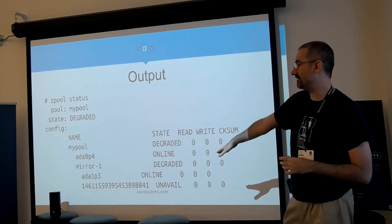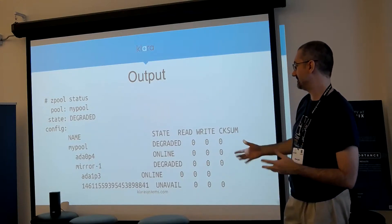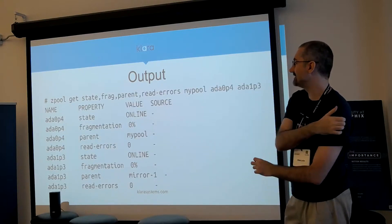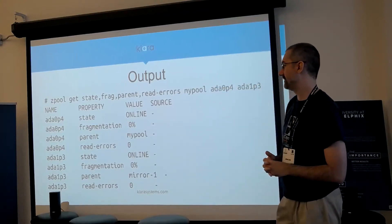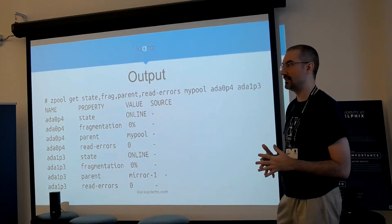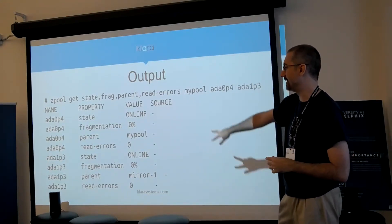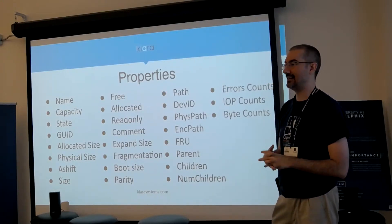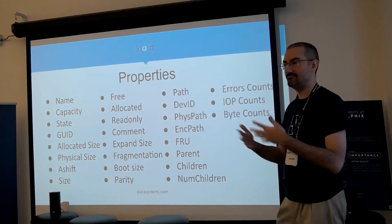In this example pool I have a device that's missing, but you can still read the ZAP because it's metadata stored in multiple copies. I have a strange pool with a single device and then a mirror where half the mirror is missing. You can say zpool get state, fragmentation, parent, and read-error-count for two disks in the pool, and you get the output showing that ADA0 is a top-level vdev (a stripe), whereas ADA1 is part of mirror-1. You can see the fragmentation levels and that neither has any read errors. There's a large list of available properties — mostly read-only — covering name, size, state, and you can also set a comment on each vdev.